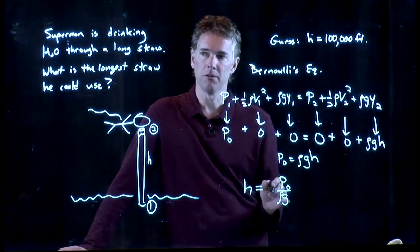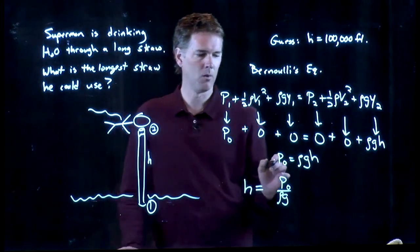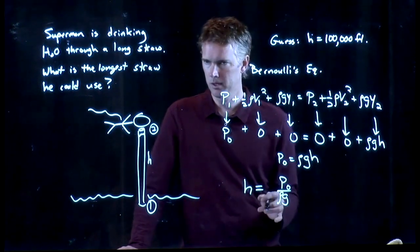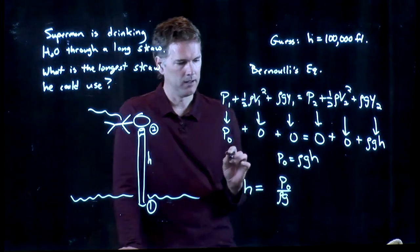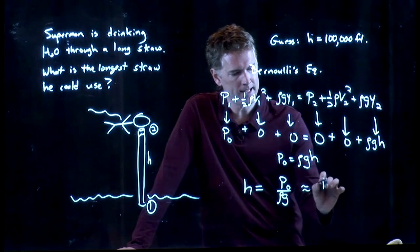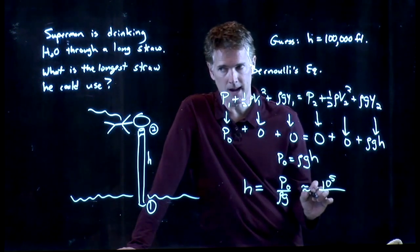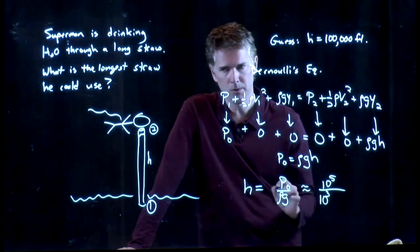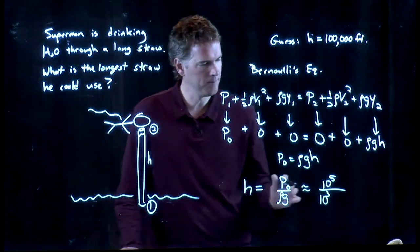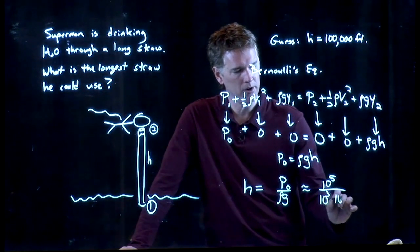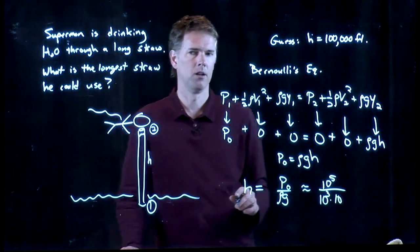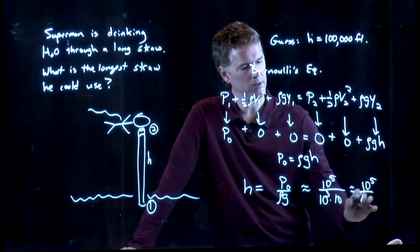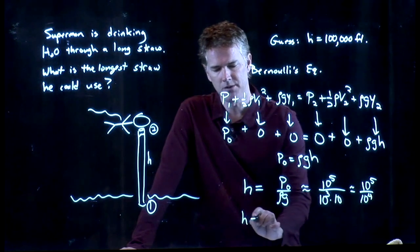And now you can plug in those numbers. You know what P0 is. It's one atmosphere. You have to put it in Pascals. You know rho. It's about 1,000 kilograms per cubic meter. You know G. It's 9.8. So let's put them in. We've got 10 to the 5 in SI units, 10 to the 5 Pascals for one atmosphere. We've got rho, which is 10 to the 3, right? It's 1,000 kilograms per cubic meter. And we have G, which is another 10. It's really 9.8, but we're going to say it's 10. And so we get 10 to the 5 over 10 to the 4, which is 10.